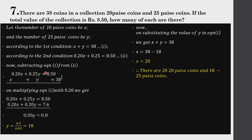Subtracting a modified form of equation 1 from equation 2: multiply equation 1 by 0.20, giving 0.20x plus 0.20y equals 7.60. Subtracting, the 0.20x terms cancel, leaving 0.05y equals 0.90, so y equals 18. That means there are 18 coins of 25 paise. Since x plus y equals 38 and y equals 18, x equals 38 minus 18 equals 20. So there are 20 coins of 20 paise and 18 coins of 25 paise. You can verify: 20 into 0.20 plus 18 into 0.25 equals 8.50.